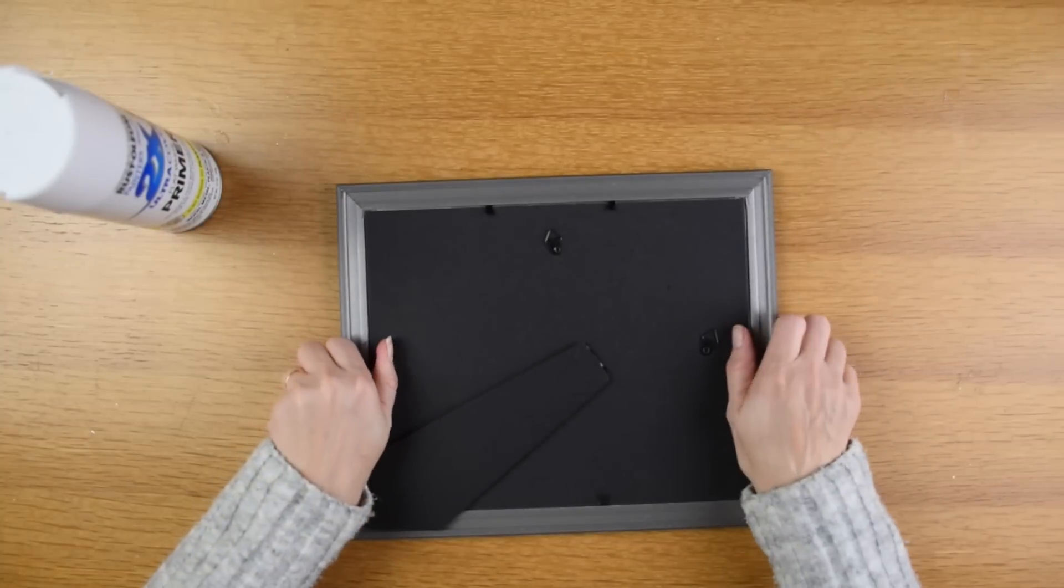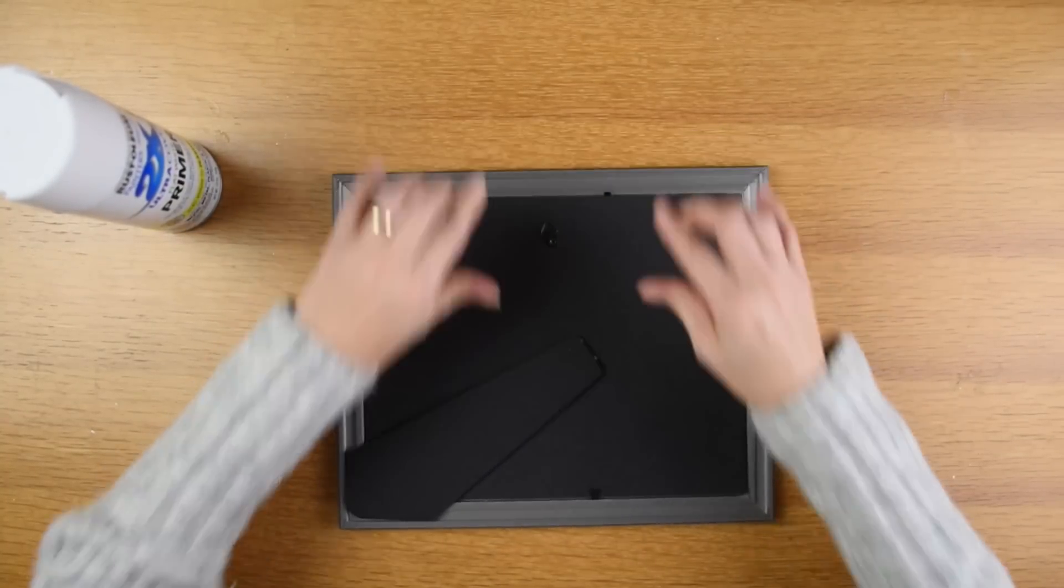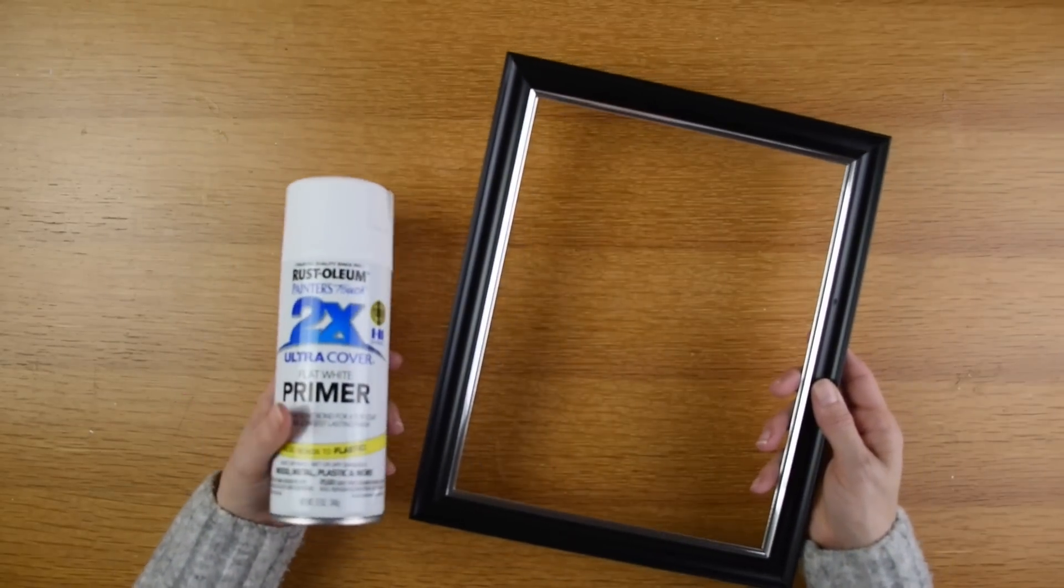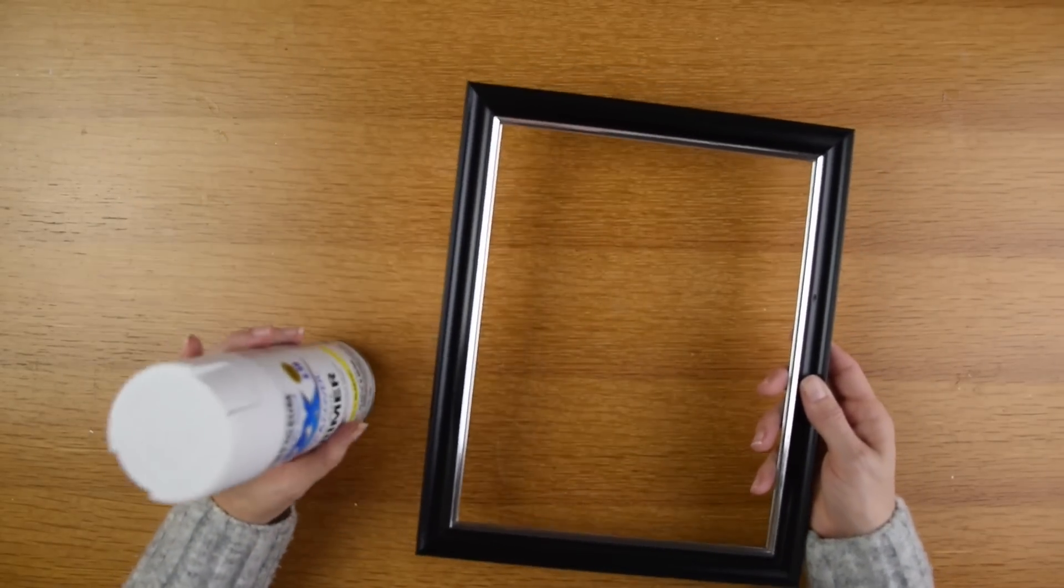I'm going to start off by taking my frame and removing the backing, the inside, and the glass frame from it. Next I'm going to take my white primer and spray paint my photo frame with it.